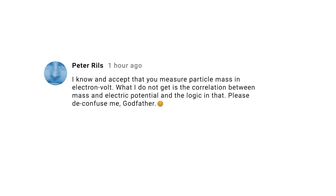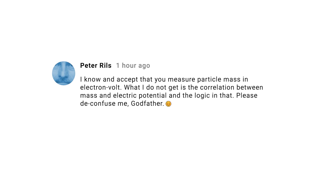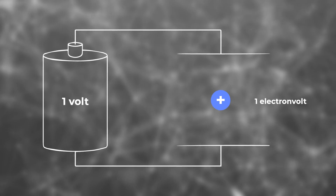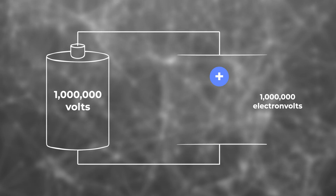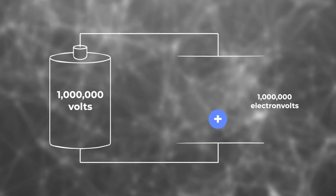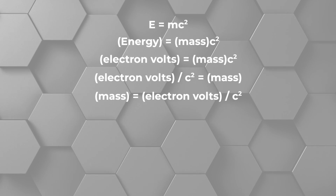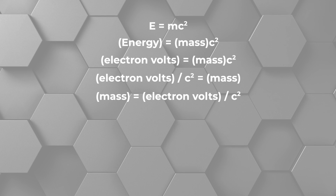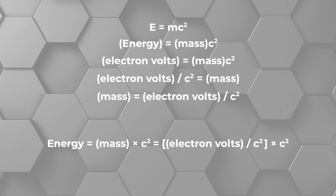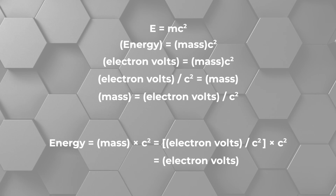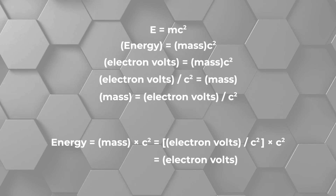Peter Riss asks for the logic connecting electric potential and mass. The connection is straightforward. Energy and electric potential are connected through the charge of a particle like a proton or electron. Take a proton and release it in a 1-volt electric field and its energy will be 1 electron volt. Put it in a million-volt electric field and it will gain 1 million electron volts of energy. If you're making particle accelerators using voltage, you see the obvious connection between electrical voltage and electron volts as energy units. The connection to mass is also straightforward — it's Einstein's famous E equals mc squared. If energy has units of electron volts, then mass has units of electron volts per c squared. Since mass units of electron volts per c squared get multiplied by c squared, they cancel. Scientists get lazy when they talk about mass units and simply drop the per c squared.